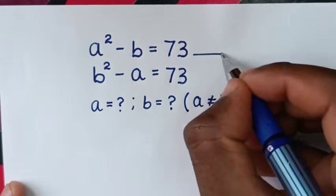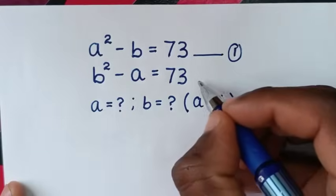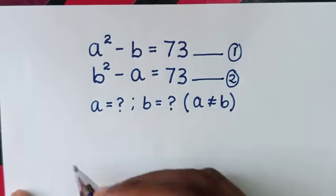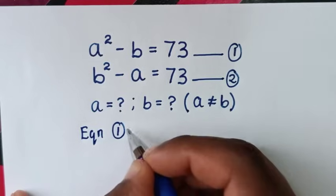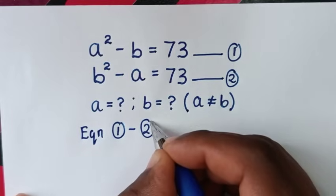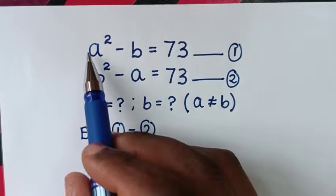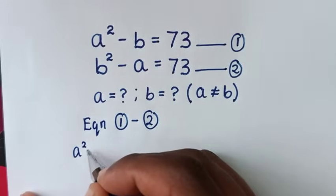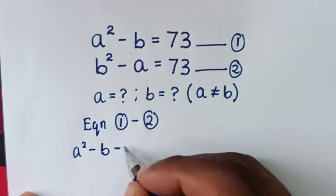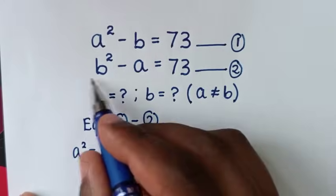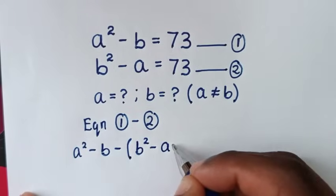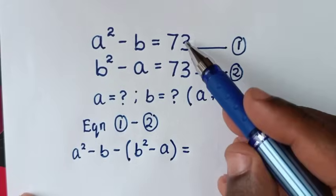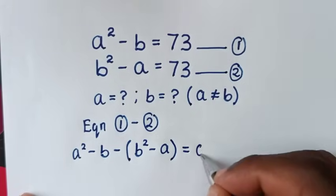In the first step, we'll start by letting the first equation as equation 1 and the second as equation 2. We'll take equation 1 minus equation 2. From the left side of equation 1, it is a squared minus b, then minus equation 2 on the left side, which is b squared minus a, and this equals zero on the right side since 73 minus 73 is 0.